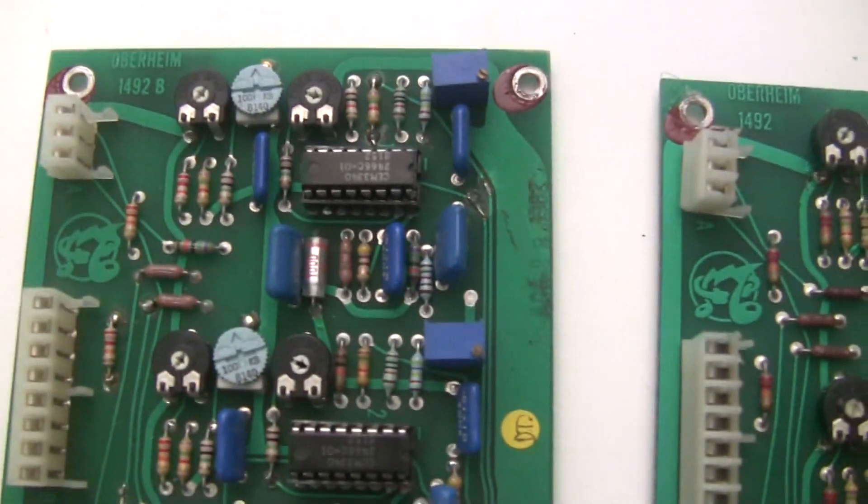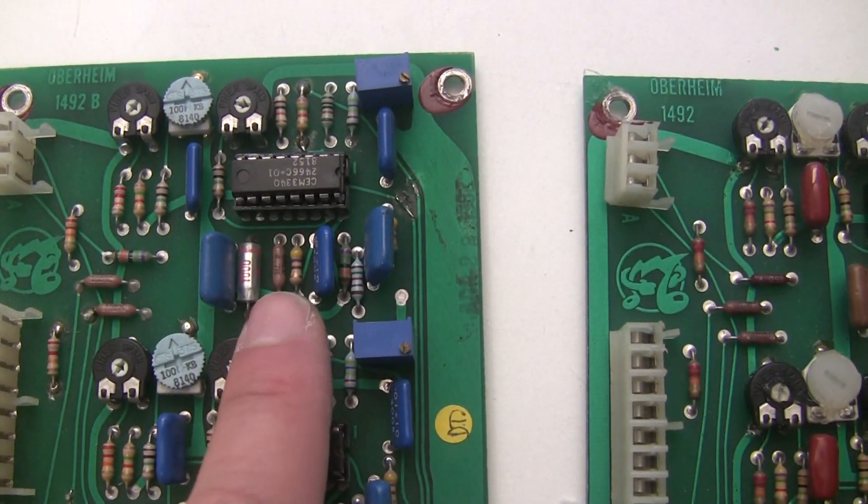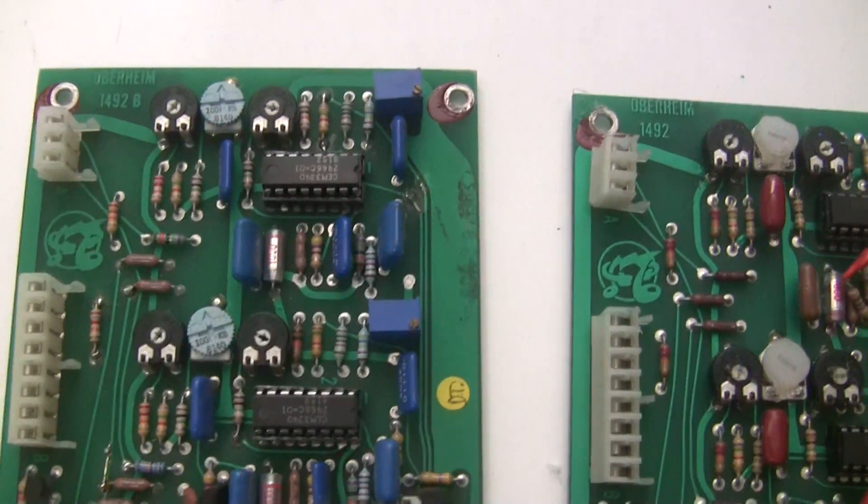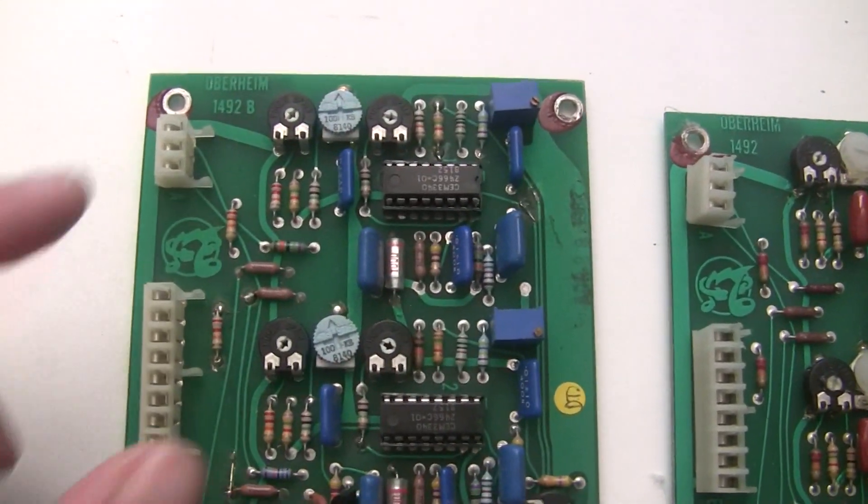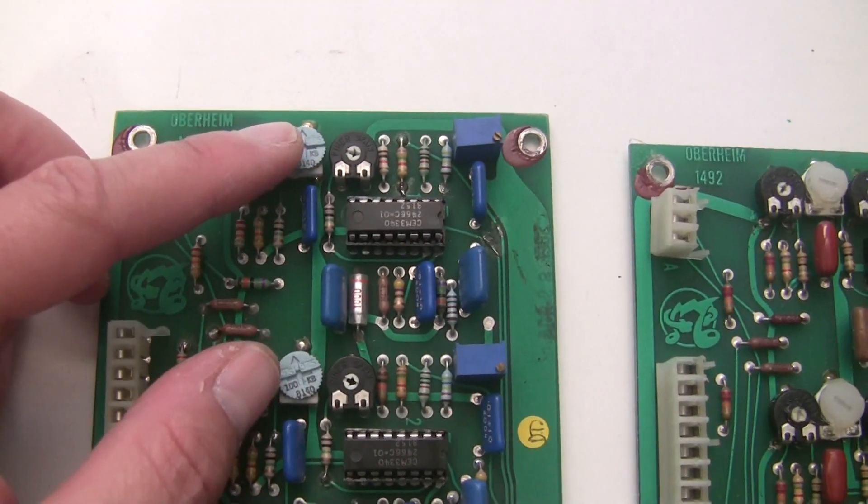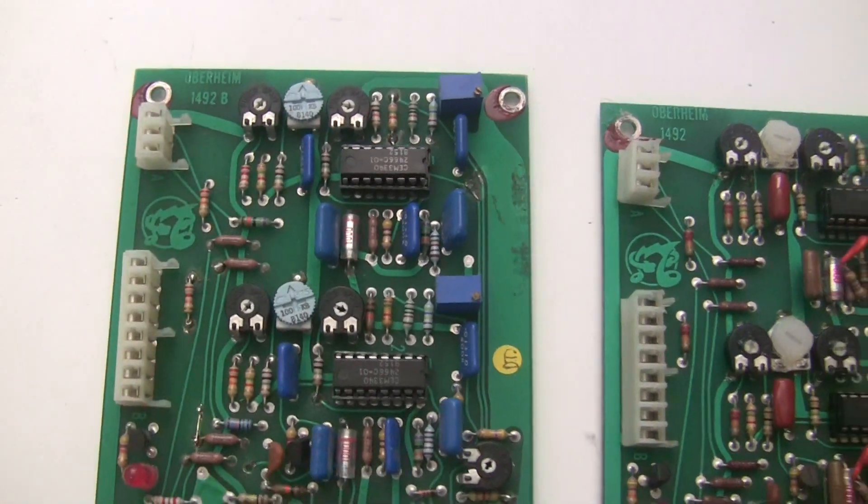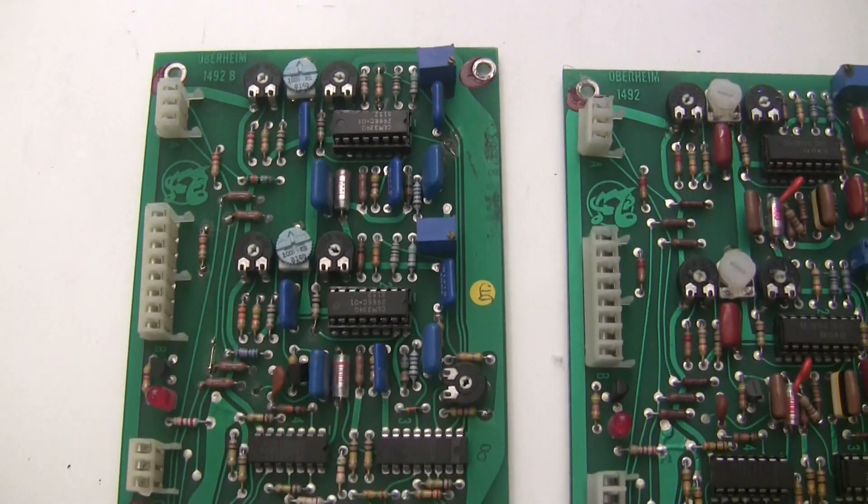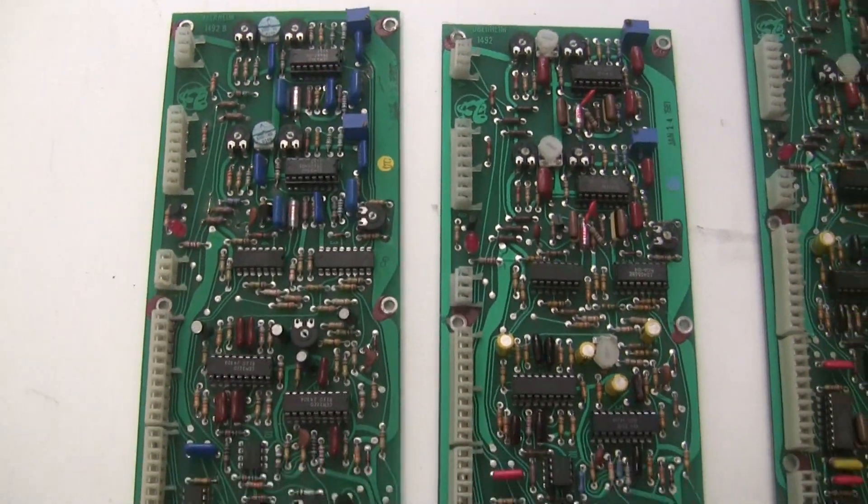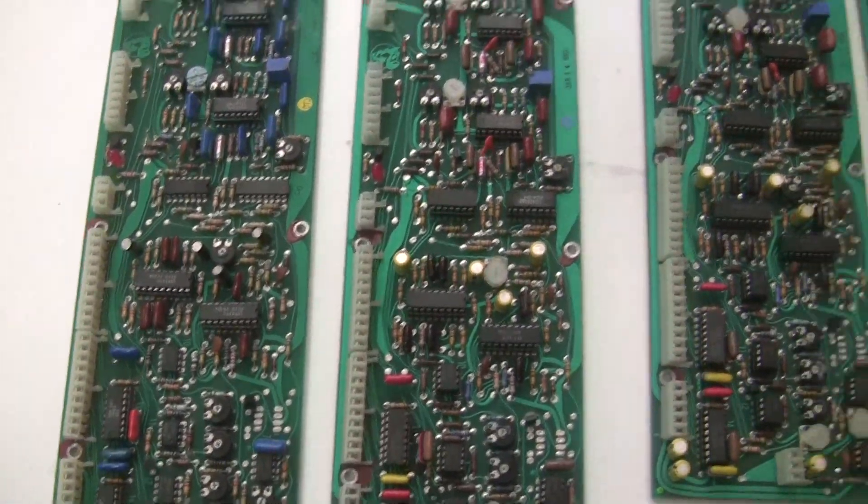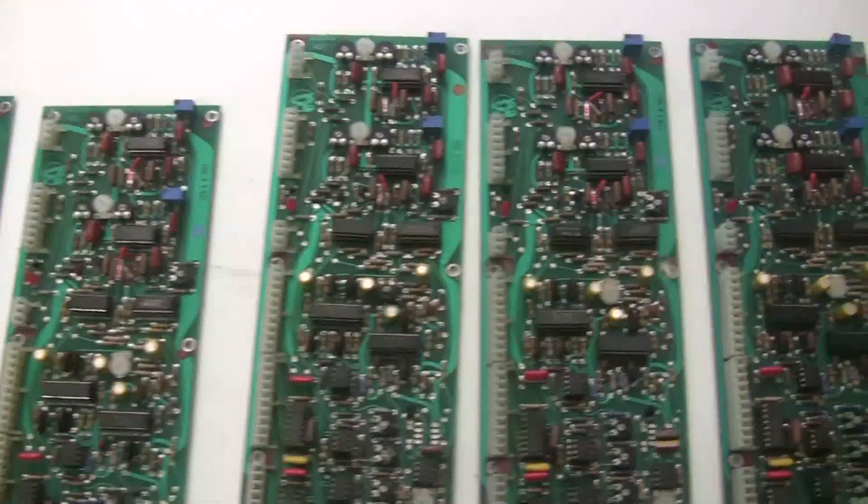On your two later revision voice cards, we're going to replace the metal film resistor here. On all the voice cards, we're going to replace the initial tuning frequency trimmer for oscillator one and oscillator two. And then we're going to go through and calibrate and see if there's any other issues as we attempt to calibrate everything.